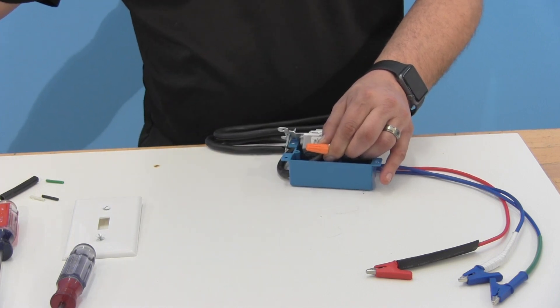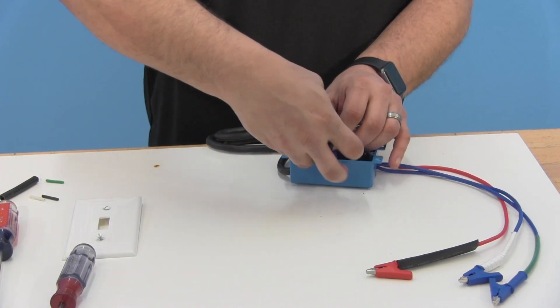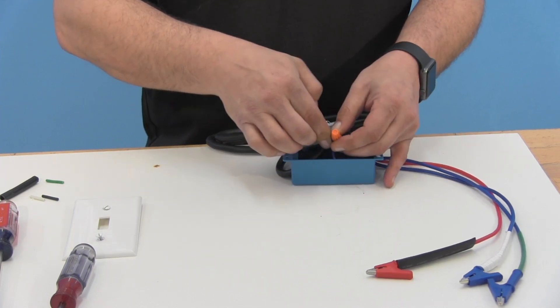And then to top it off, we're going to use a piece of electrical tape and again we're going to wrap this around clockwise the way we spun the wire nut so it does not come loose.